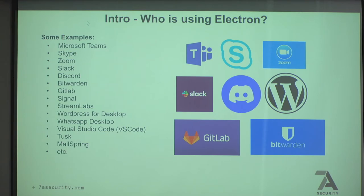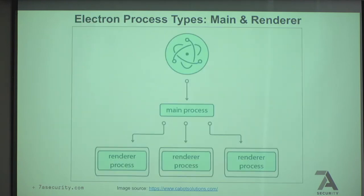What companies are doing this? Maybe some of these ring a bell: Microsoft Teams, Skype, Zoom, Slack, Discord. Lots of big companies. It's important to know about Electron security because lots of big companies are using it with very popular applications.